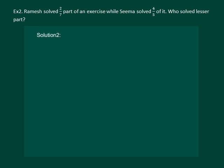Let us read the question. Ramesh solved 2 by 7 part of an exercise while Seema solved 4 by 5 part of it. Who solved lesser part? We are given that Ramesh solved 2 by 7 part and Seema solved 4 fifths part of the question. In order to find out who solved lesser part of the exercise, let us convert these into like fractions and see which of the fractions is greater.